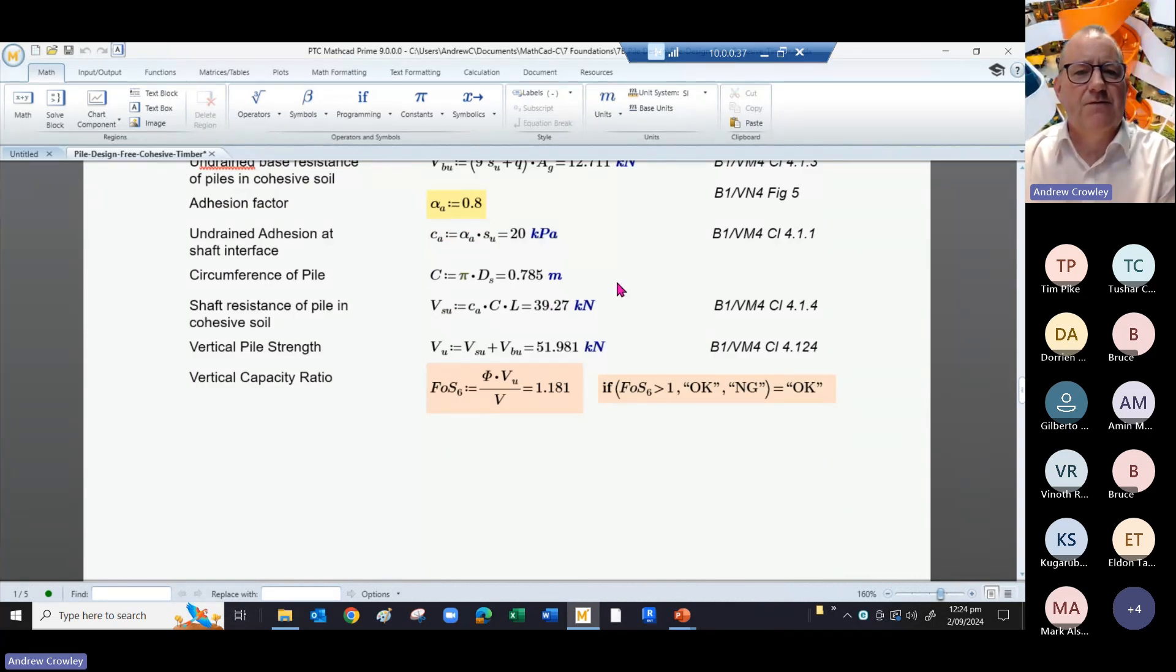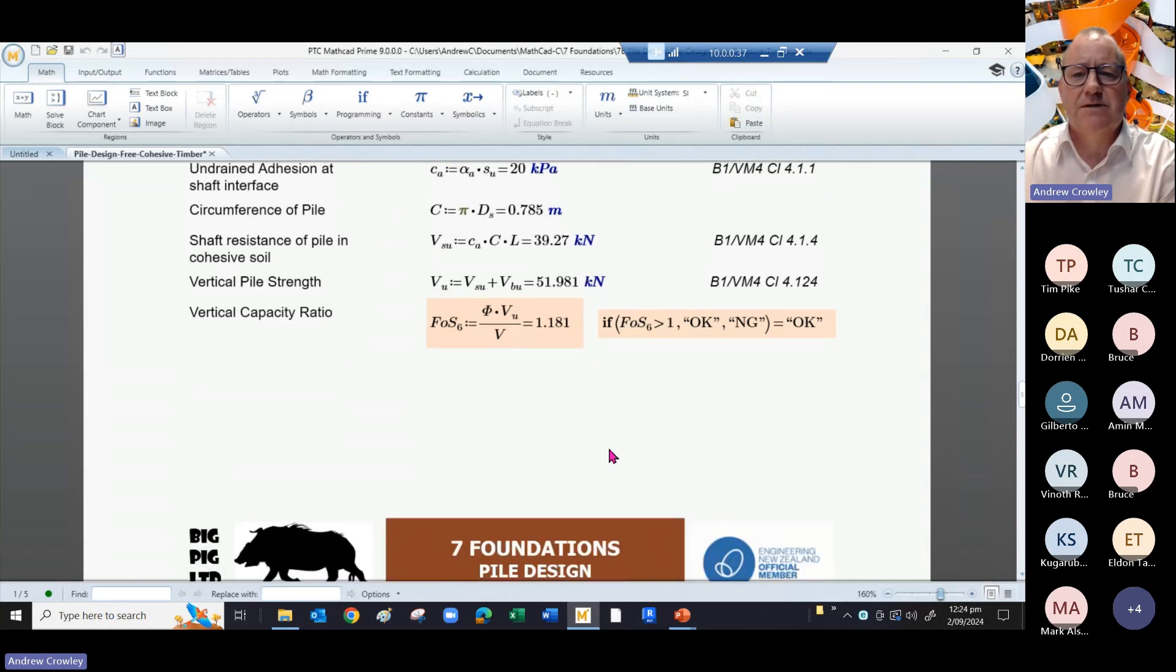This gives us a vertical pile strength of 51, so our vertical capacity ratio is 1.18, so that's just about good enough. So that's the short term.